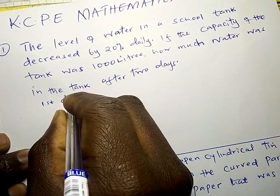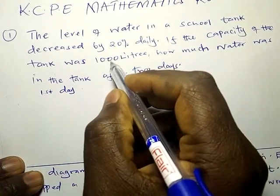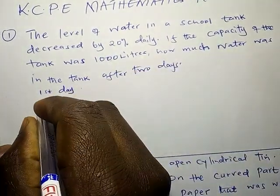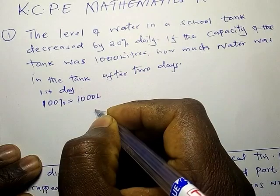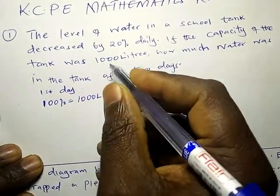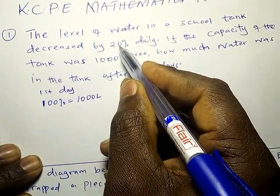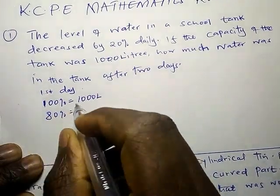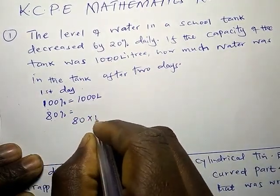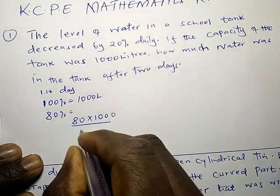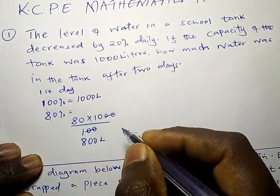On the first day, the water in the tank is 100%, which is 1000 liters. By the end of this day, 20% must have been decreased. So we do 100% minus 20%, which gives us 80%. We ask: if 100% is 1000, what about 80%? That is 80 times 1000 divided by 100, which gives us 800 liters.